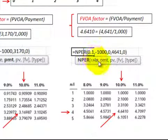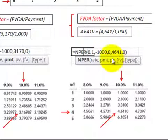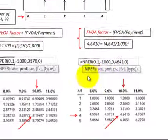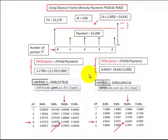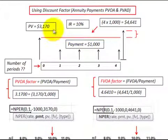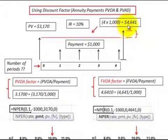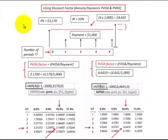In Excel, enter the 10% rate, then the payment amount with a minus sign, the present value as zero (since we're making a future value investment), enter the future value, set the type, and the function returns the number of periods. In summary, you need to know three variables and you can calculate the fourth: for present value of an ordinary annuity you need the interest rate and payment to find periods; for future value, you need the future value, payment, and interest rate to find the number of periods.